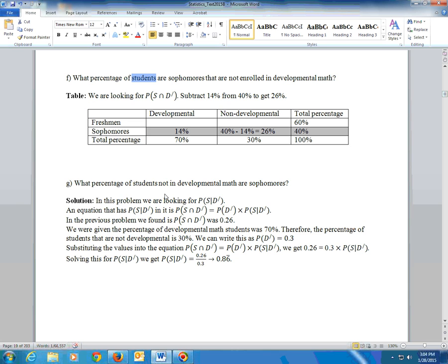G says, what percentage of students not in developmental math are sophomores? It's out of the students that are not in developmental math. So given that they're not in developmental math, what percentage of those students are sophomores? So we're looking for the probability of S given not D. Write an equation that has S given not D in it.